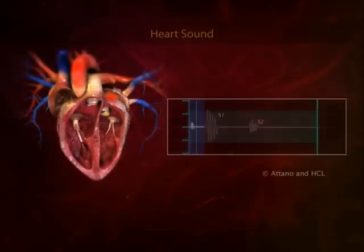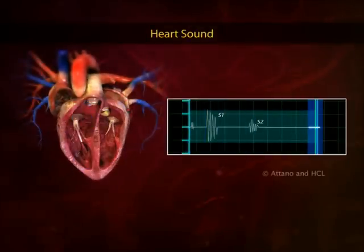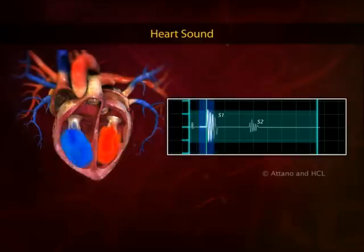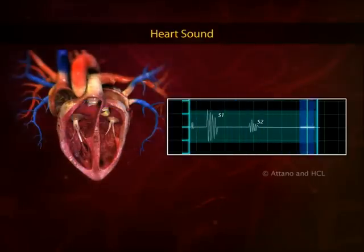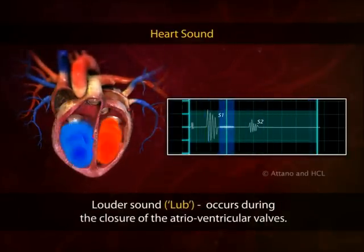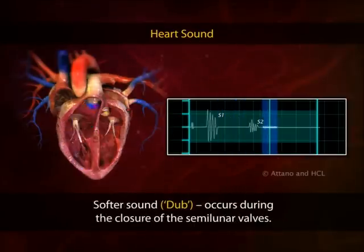The characteristic lub-dub sounds of the heartbeat are produced as the valves close. The closing of the atrioventricular valves produces the louder 'lub' sound, and the closing of the semilunar valves produces the softer 'dub' sound.